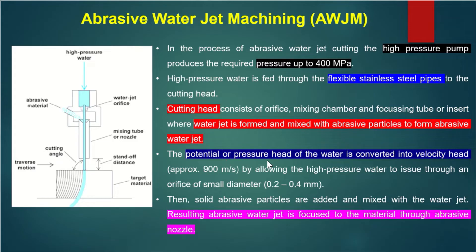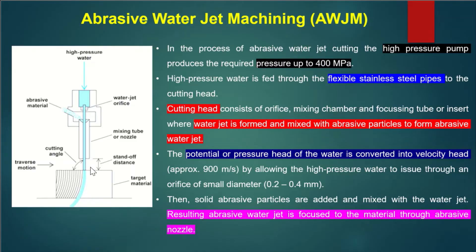The pressure head of the water is converted to velocity — a high velocity of approximately 900 meters per second. It is allowed to pass through a small diameter orifice of 0.2 to 0.4 mm. The resulting abrasive water jet is then focused onto the material through the abrasive nozzle.